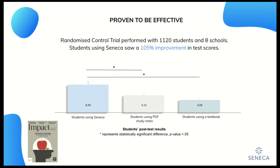A randomised controlled trial was conducted with over 1,100 students to understand the impact of Seneca. All students sat a pre-test, which showed no difference of understanding of that topic. Post-test results showed that students using Seneca did more than twice as well as the control group, displaying a 105% improvement.